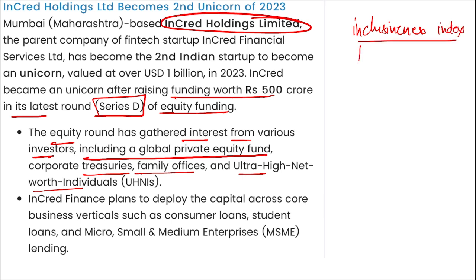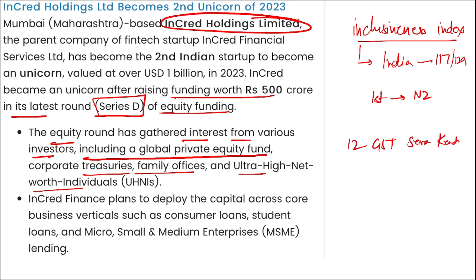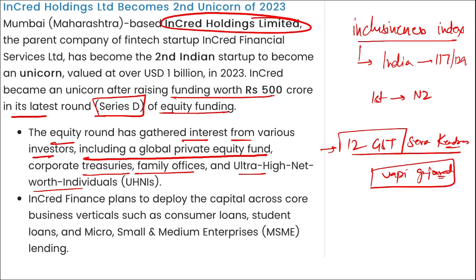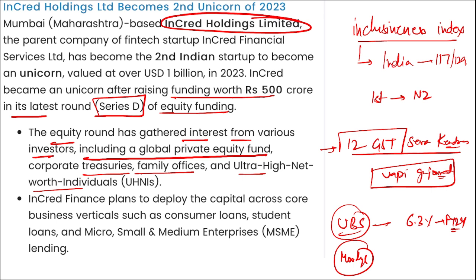In the Inclusiveness Index, India is at 117th position out of 129 countries. New Zealand secured the top position. Then, 12 GST Seva Kendras were launched at Vapi, Gujarat by Nirmala Sitharaman. UBS has raised India's GDP forecast to 6.3% for fiscal year 2024, and Moody's retained India's GDP growth rate at 6.7% for 2023.